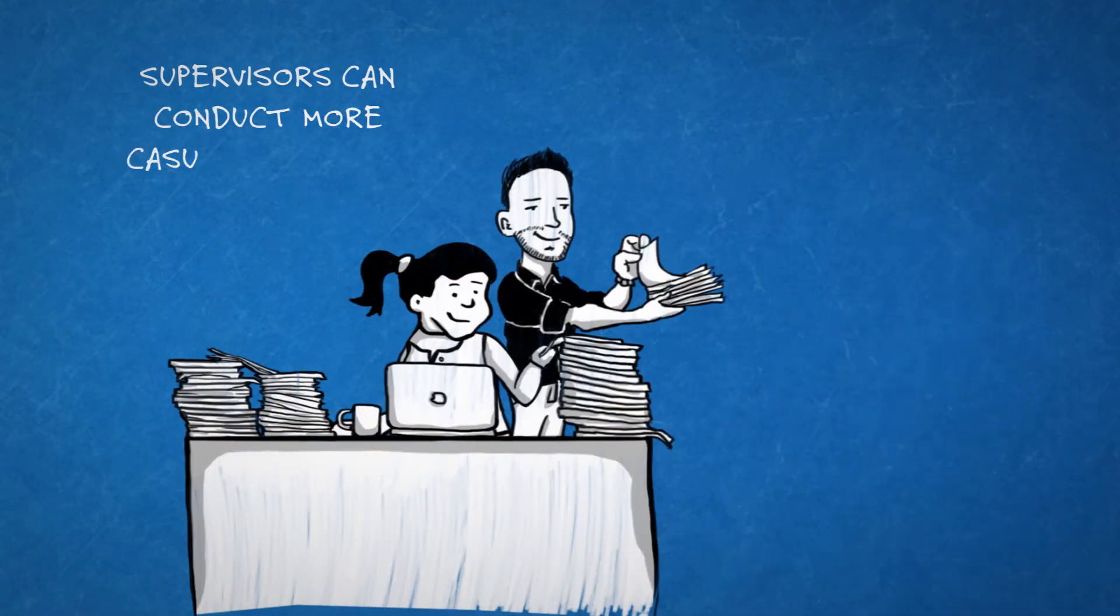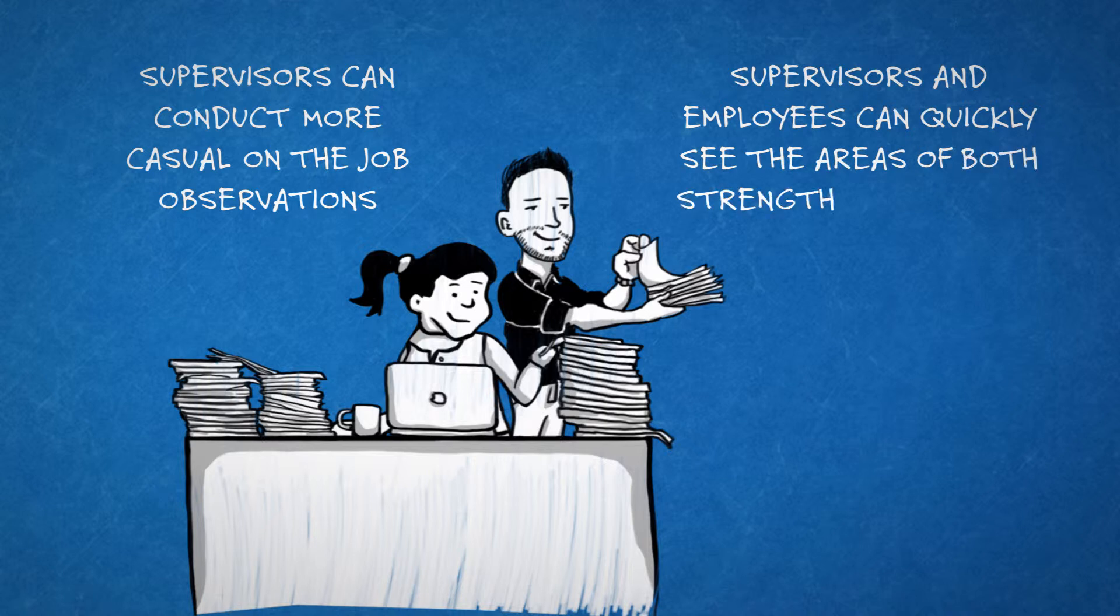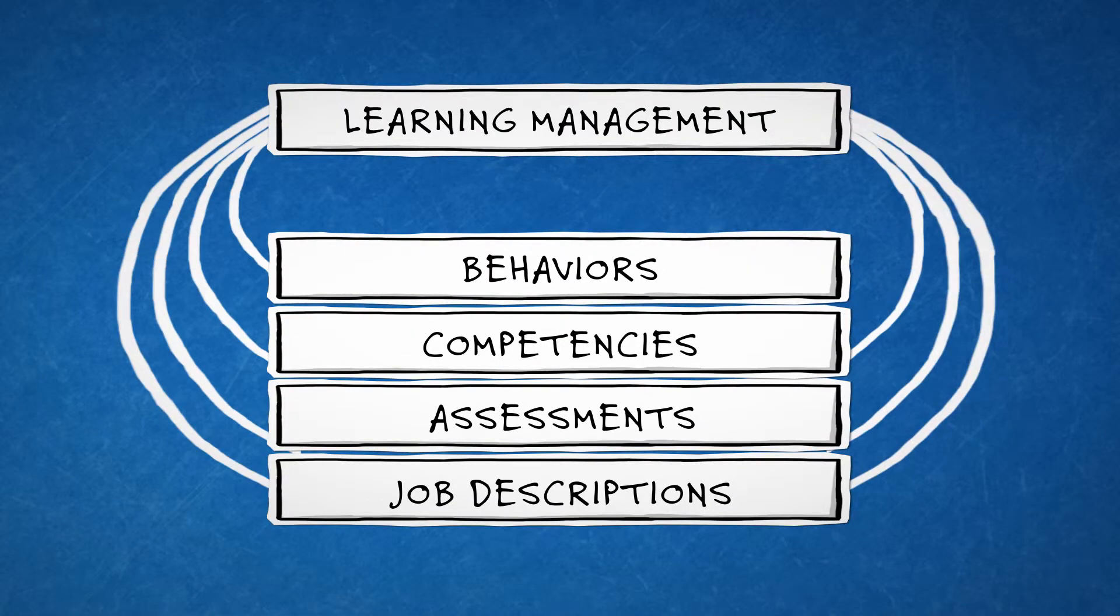Supervisors can conduct more casual on-the-job observations, utilizing the actions as a guide, and supervisors and employees can quickly see the areas of both strength and training opportunity. This provides the fourth connection to learning management.